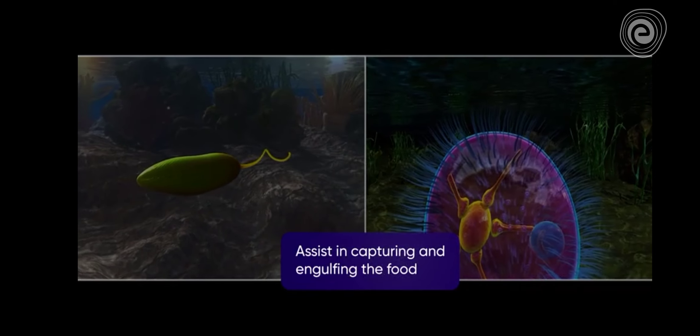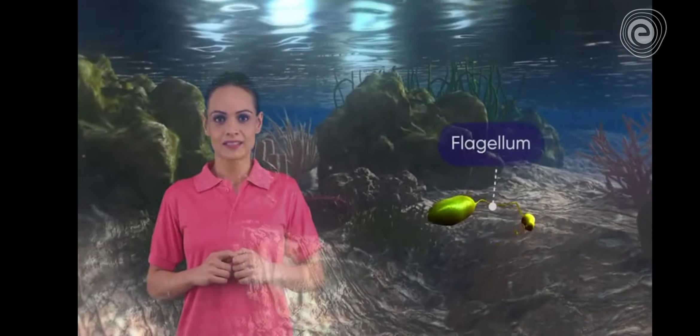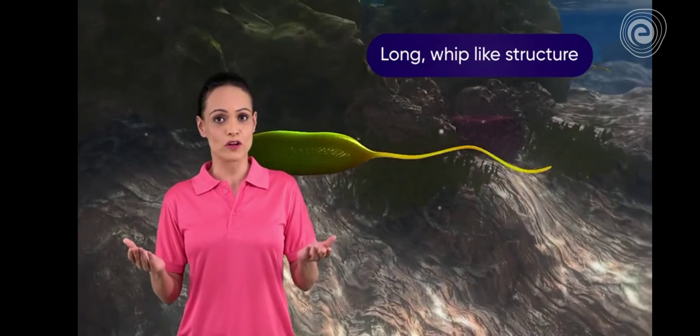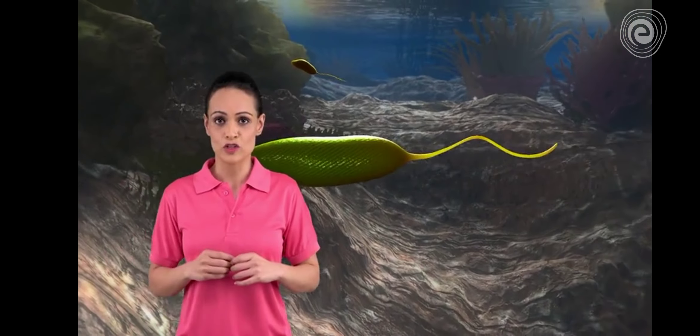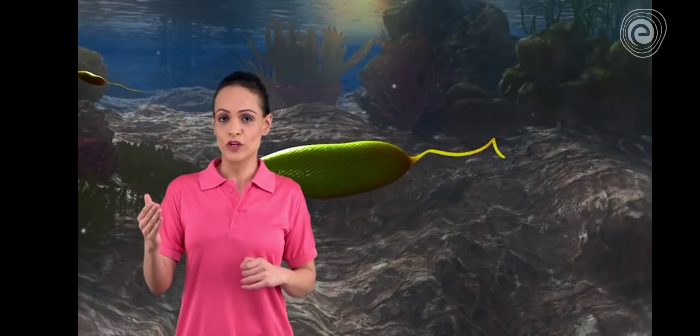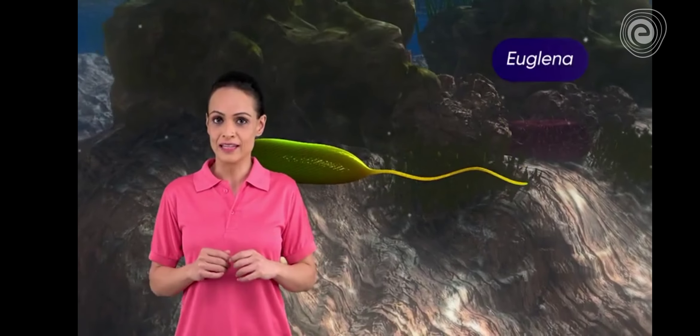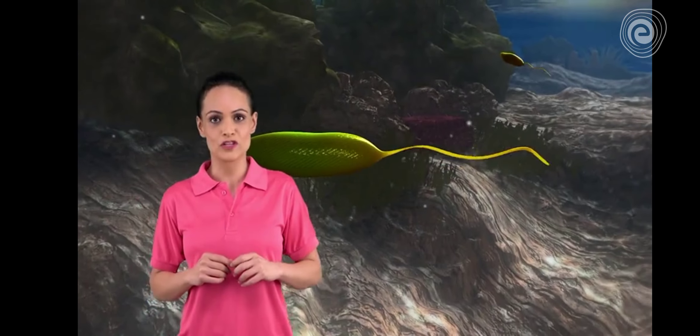Flagella: it is a long whip-like structure. The number of flagella at the anterior end of the organism may vary from one to many. Euglena is an example of a flagellate organism.